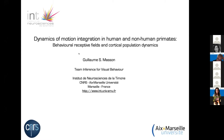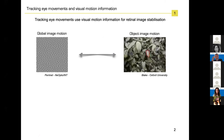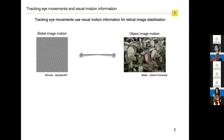Thanks for the introduction and the opportunity to talk about what we're doing here. What I would like to talk about today is how the brain controls eye movements from a sensory perspective — that is, what is the visual information processing needed in order to control eye movements, and in particular tracking eye movements.